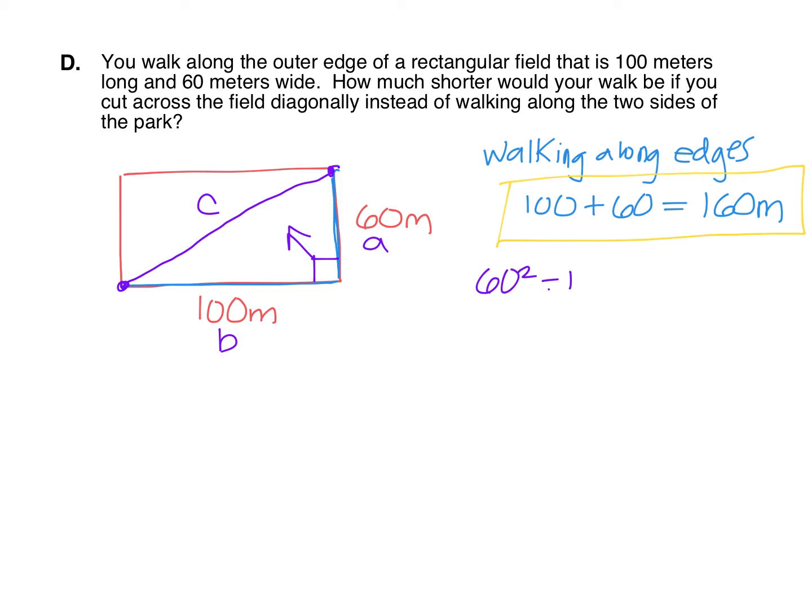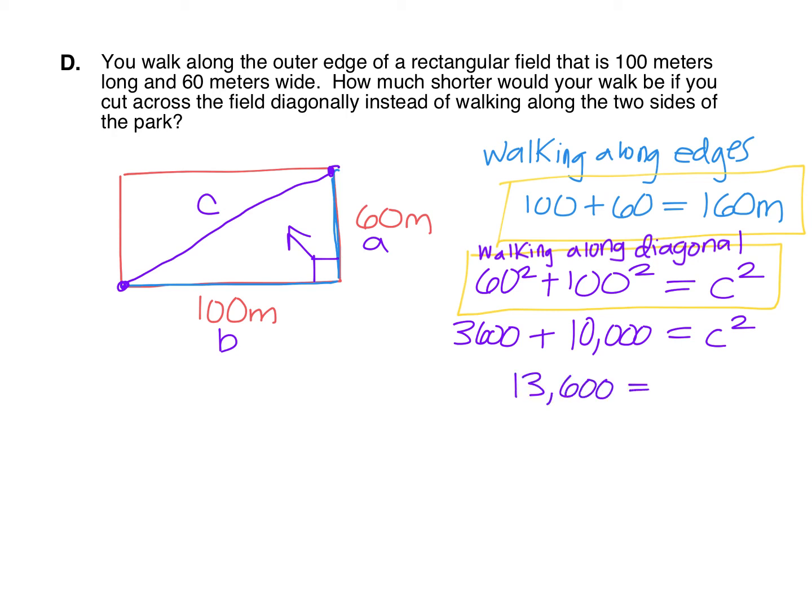So we can do the Pythagorean theorem and do A squared plus B squared equals C squared. So 60 squared plus 100 squared equals C squared. 60 squared is 3,600. 100 squared is 10,000. Add those together, and we have 13,600 equals C squared. So then I'm just going to put that into my calculator, do the square root.